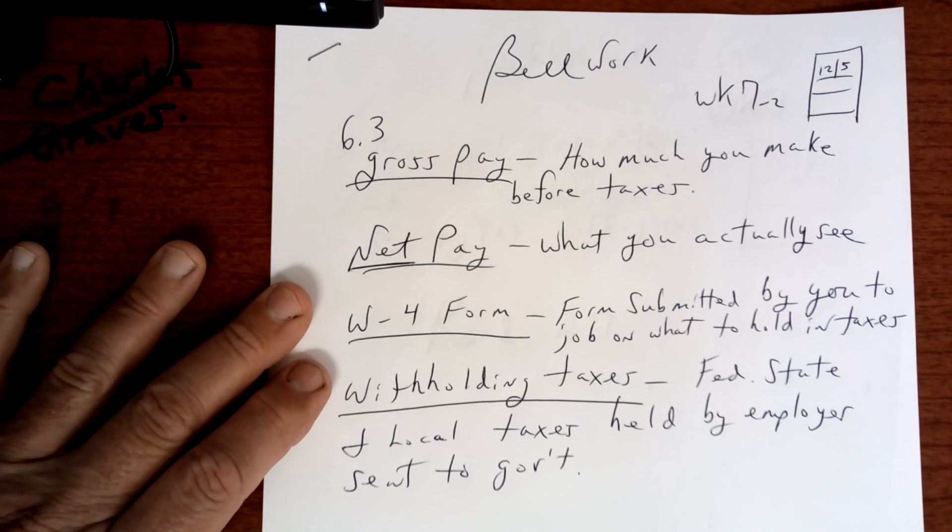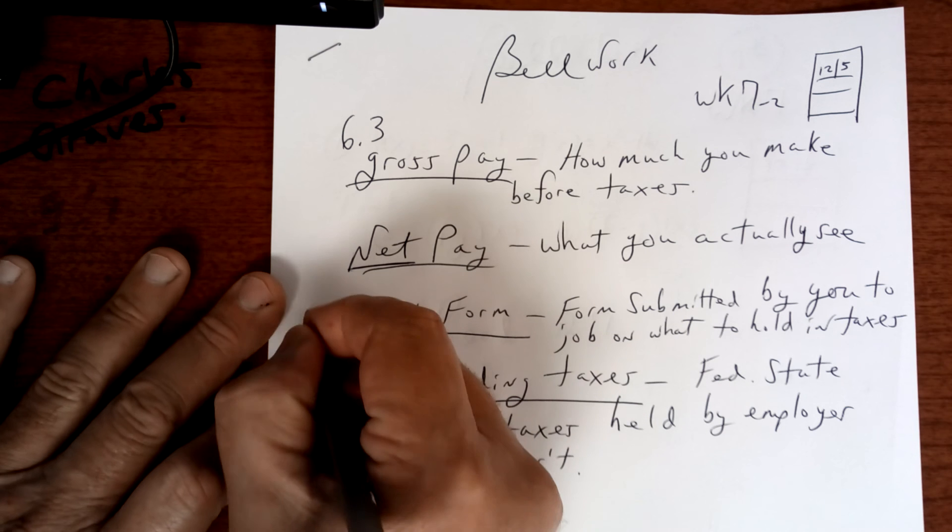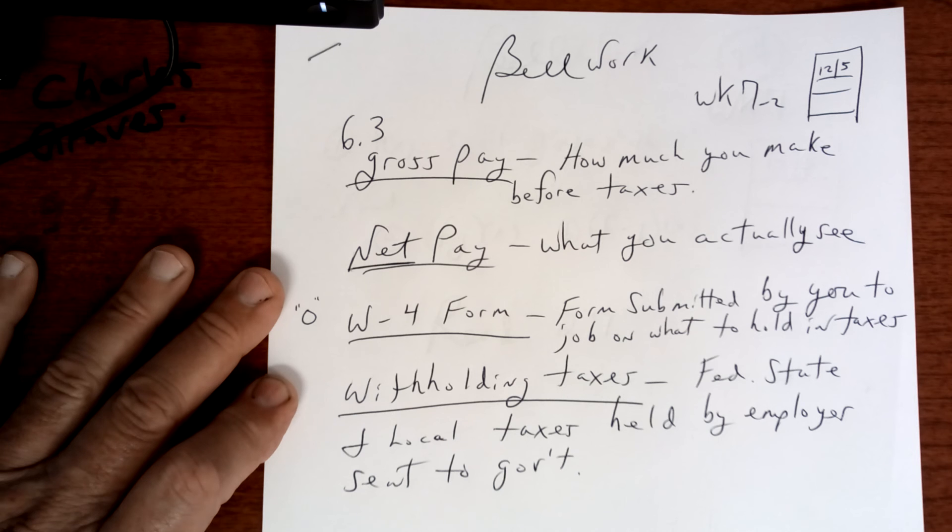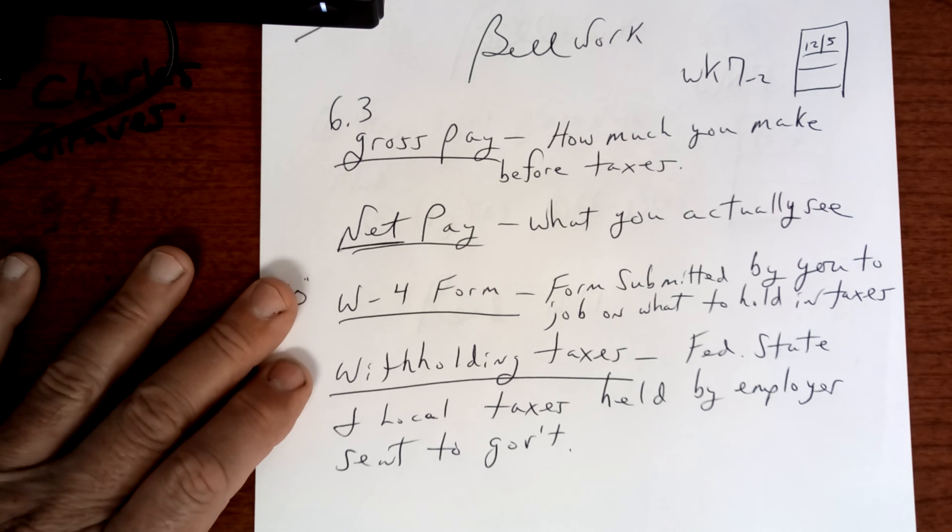W-4 form is a form that you submit to your employer and it tells them how much taxes to hold. Remember, by claiming zero, they take out the maximum amount of tax. That way, on April 15th, when you have to pay taxes, you actually get money back. But that's your option.